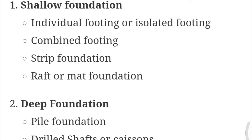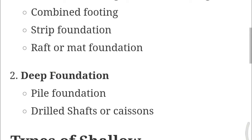In shallow foundation there are four types: individual footing or isolated footing, combined footing, strip footing, and raft or mat foundation. In deep foundation they are classified into two types: pile foundation and drilled shaft or caissons.